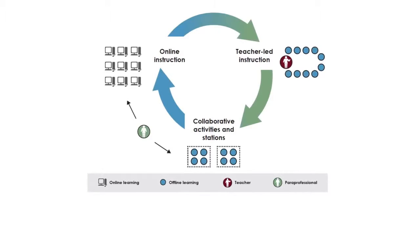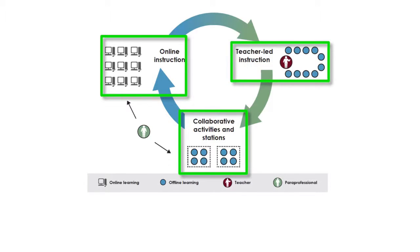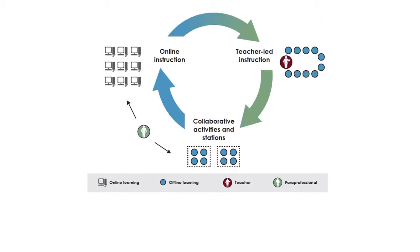There are a couple of things to keep in mind. While this diagram shows a rotation among three stations — online instruction to teacher-led instruction to collaborative activities — these can be done in a different order if you so decide. You can even have a different number of stations; it doesn't have to be three. Another item worth mentioning is that this model does allow the option for classes to rotate all together as a whole class or even separately in smaller groups.